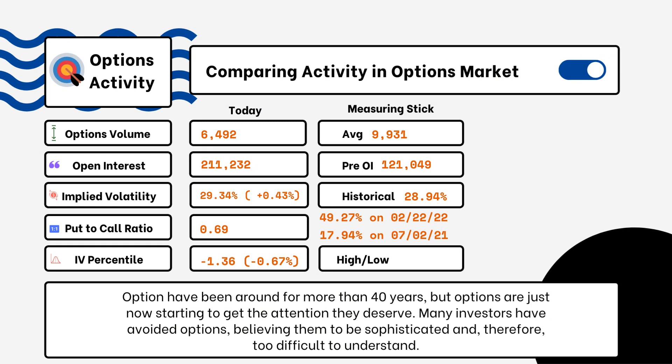We've provided details on today's option activity. What you'll be able to see here is options volume, open interest, implied volatility, put-to-call ratio, and IV percentile. One of the most popular indicators for traders is the put-to-call ratio.